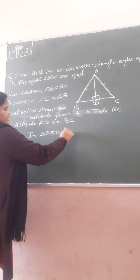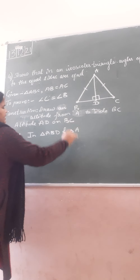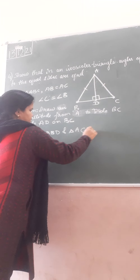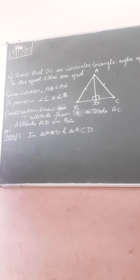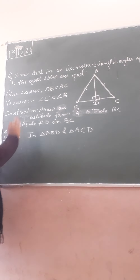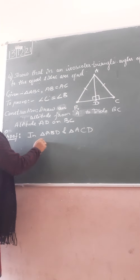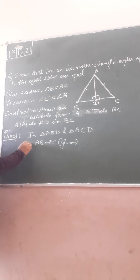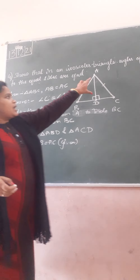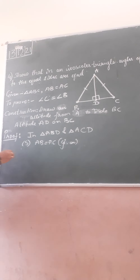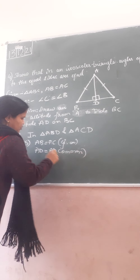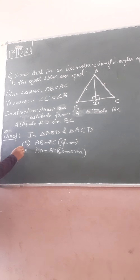Triangle ABD and triangle ACD. AB is equal to AC — given. Side. AD is equal to AD — common side. Angle ADB is equal to angle ADC — both are 90 degrees, since AD is the altitude.